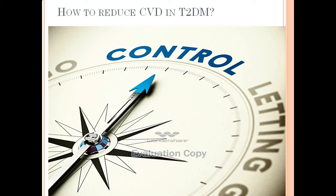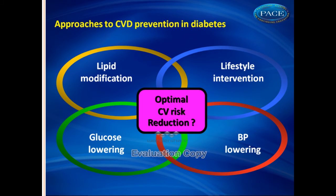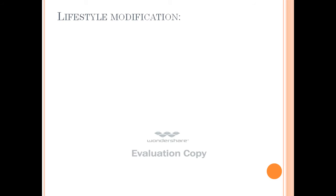So how do you reduce cardiovascular disease in type 2 diabetes? The basic answer is to control, control, control — and by control we do not only mean good control of your blood glucose or blood sugar, but also your cholesterol, your blood pressure, and other factors. The basic step your doctor would advise you on is lifestyle modification.